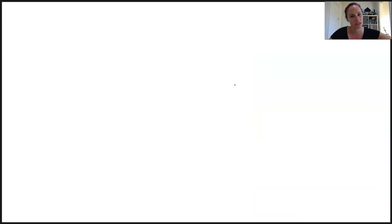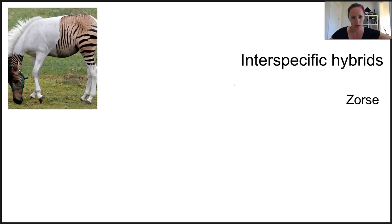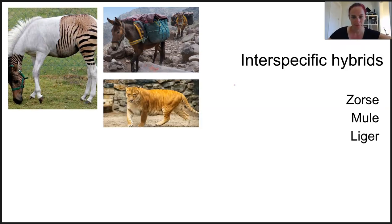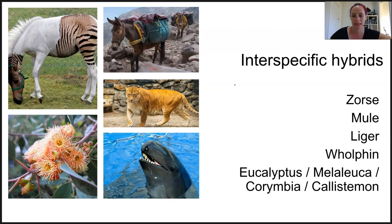As with any set of rules, there are always exceptions. While one definition of species considers that only organisms within the same species can interbreed in the wild and produce viable offspring, there are examples of organisms of different species which can interbreed, although usually in a zoo context rather than in the wild. Some examples include a zorse, a mule — which is a hybrid of a donkey and a horse — a liger, and a wolfen, which is a real word. There are also some plant species such as eucalyptus, melaleuca, corymbia, and callistemon, which are interestingly all Australian natives.